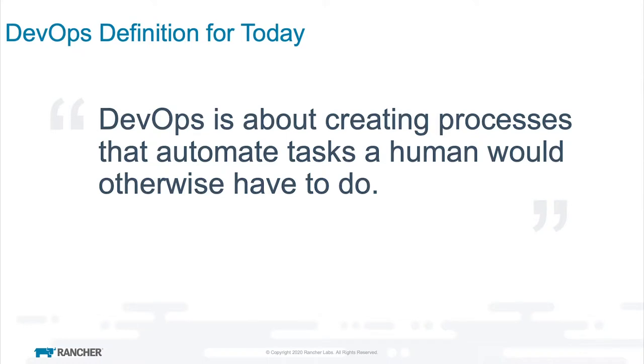Regardless of the specifics, DevOps is about creating processes that automate things that a human would otherwise have to do. Because humans are terrible at doing the same thing over and over again — we're either screwing around with it and calling it optimization, or just doing it differently because we can. When you apply that to systems that like consistency, you end up with drift. You go from having a bunch of nodes and apps working in harmony to a cacophonic symphony of five-year-olds bashing on a piano.